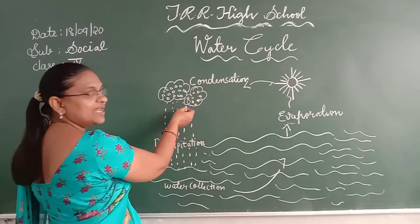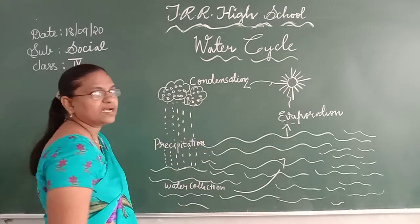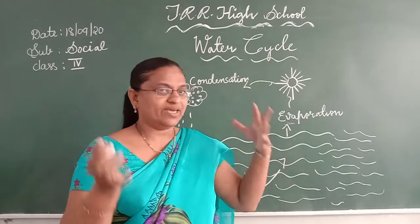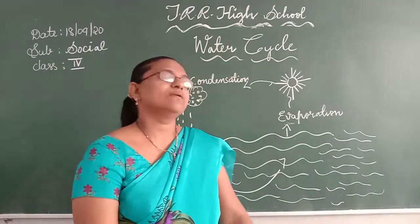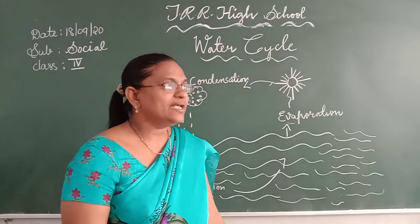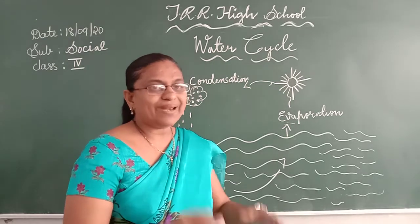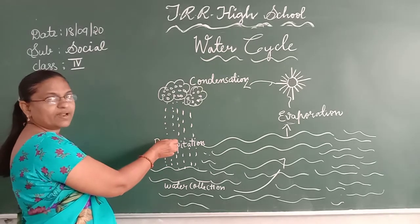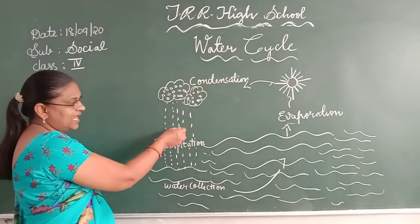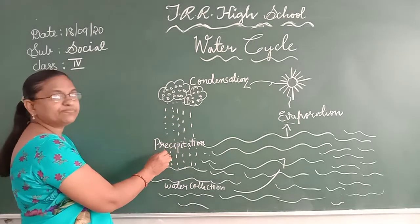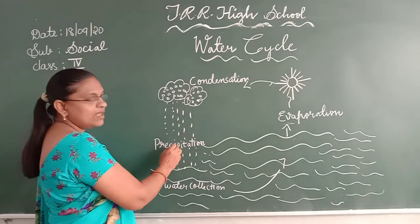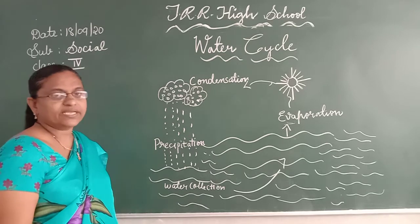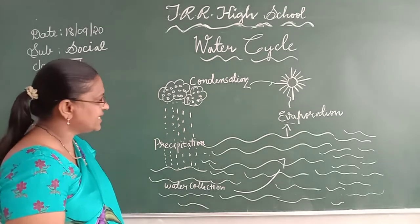After condensation, what will happen children? The clouds fill up with water drops and become very heavy. The water begins to rain from the clouds. This is called precipitation. This is the third stage in the water cycle.